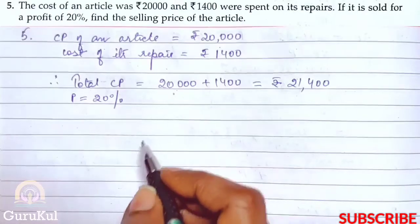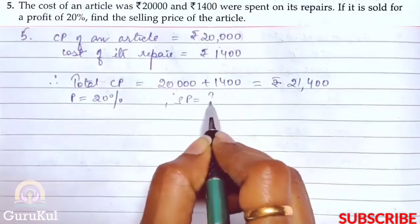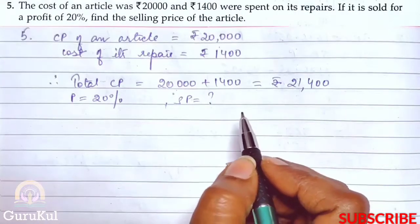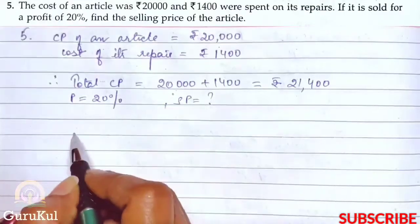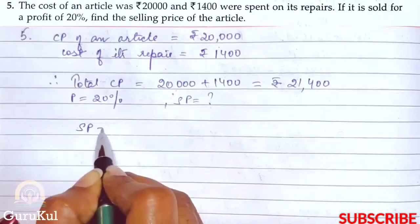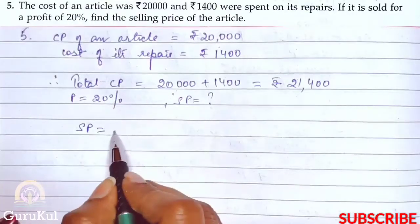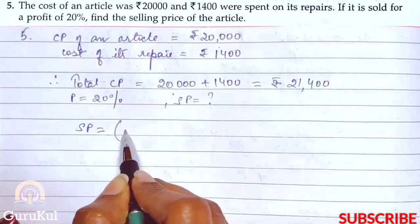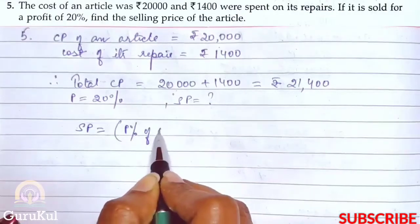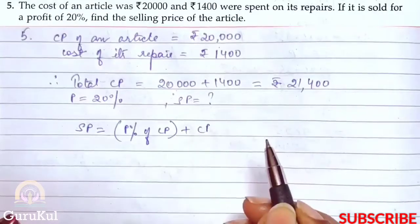We need to find the selling price of the article. SP is equal to — when profit percent is given, the formula is: (profit percent of CP) + CP.